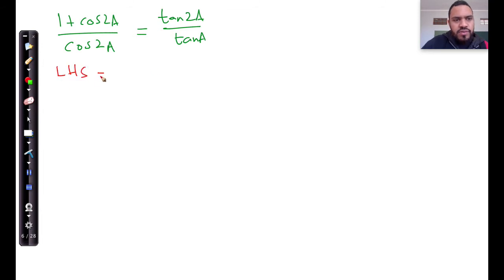The left-hand side is equivalent to 1 plus cos of 2a, divided by cos of 2a. And then we're going to go further and say, okay, that must be 1 plus 2 cos squared a minus 1.